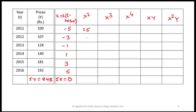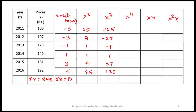x² values: 25, 9, 1, 1, 9, 25, so summation(x²) = 70. x³ values: −125, −27, −1, 1, 27, 125, so summation(x³) = 0. x⁴ values: 625, 81, 1, 1, 81, 625, so summation(x⁴) = 1414.